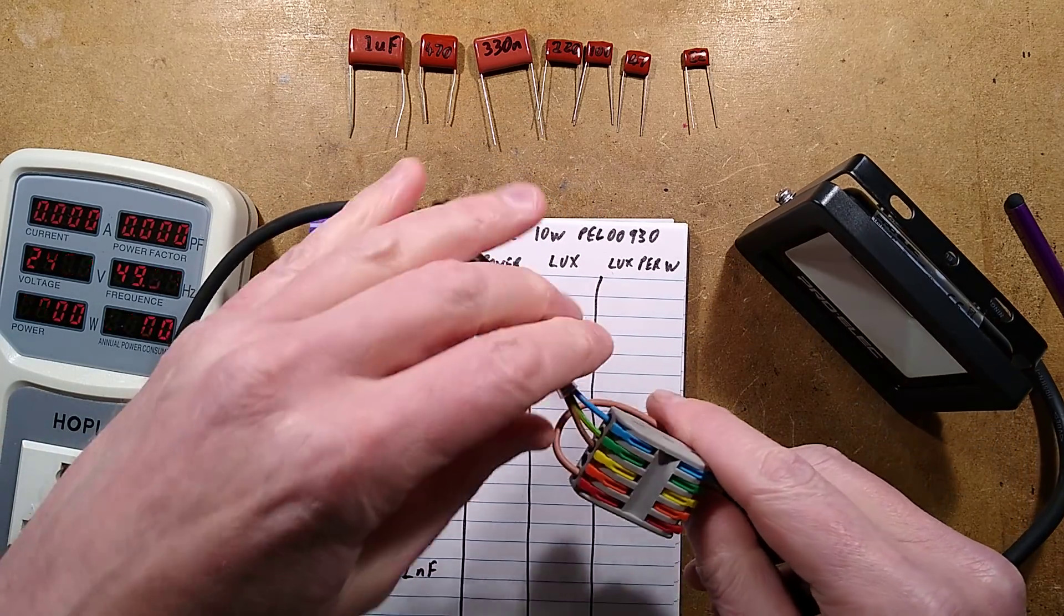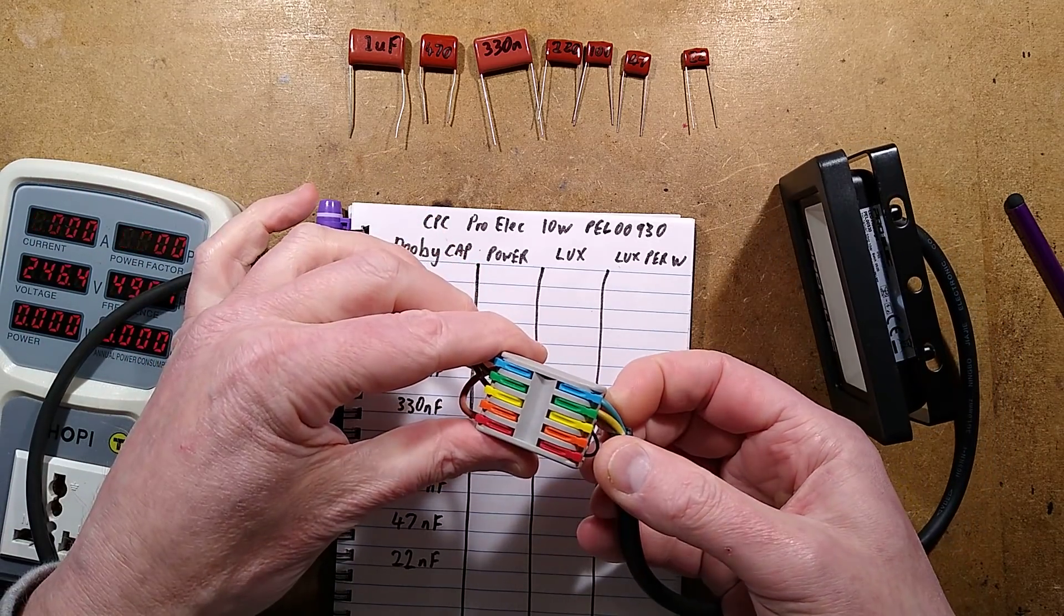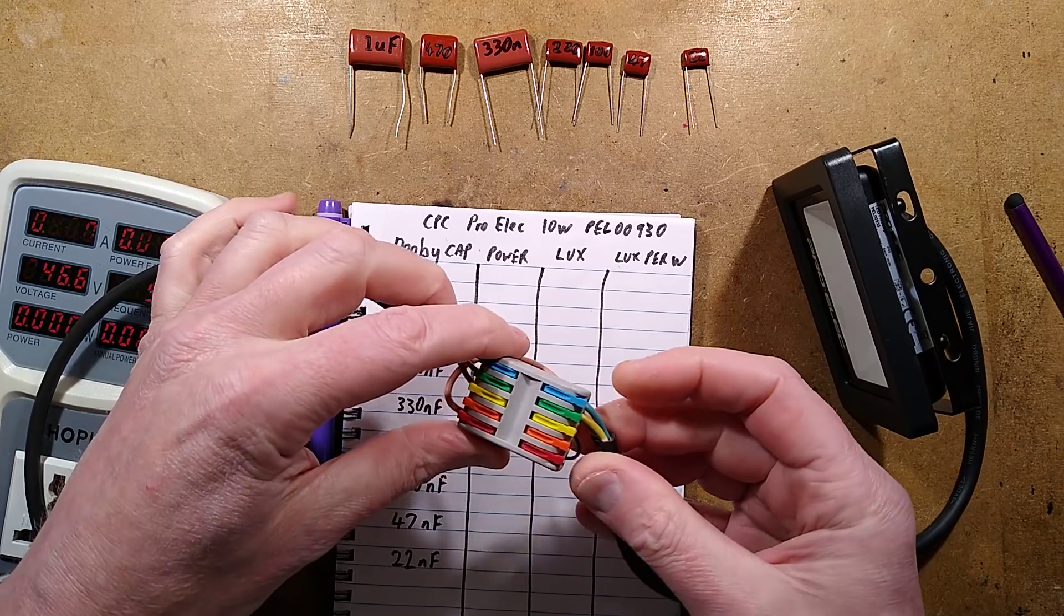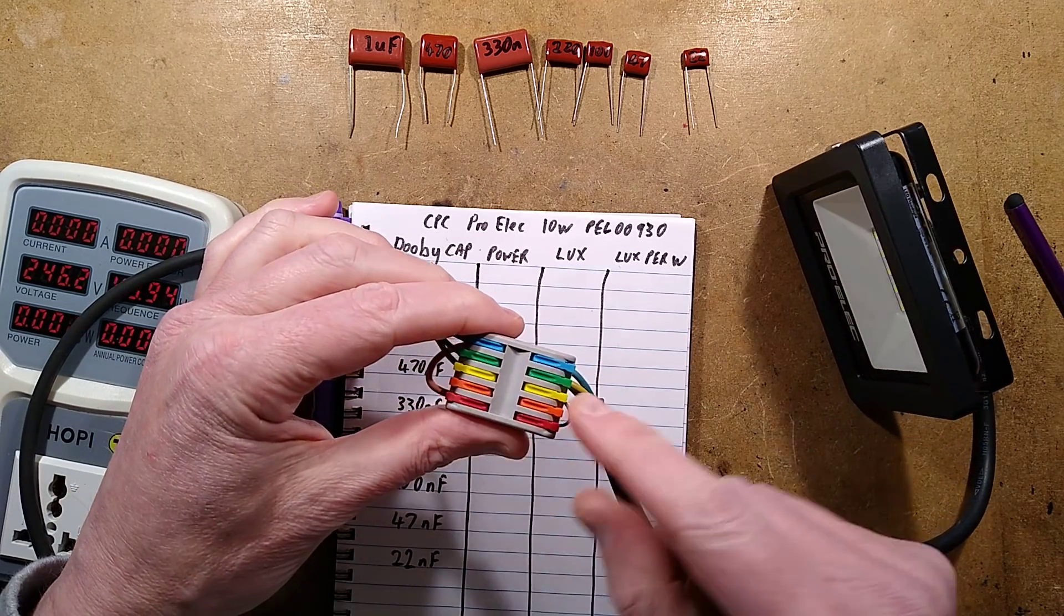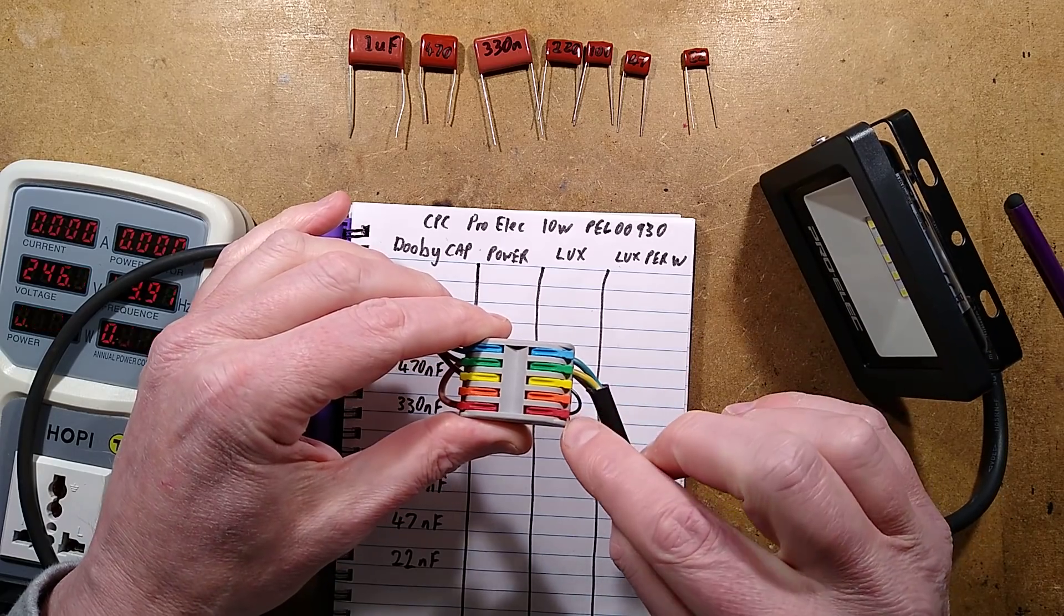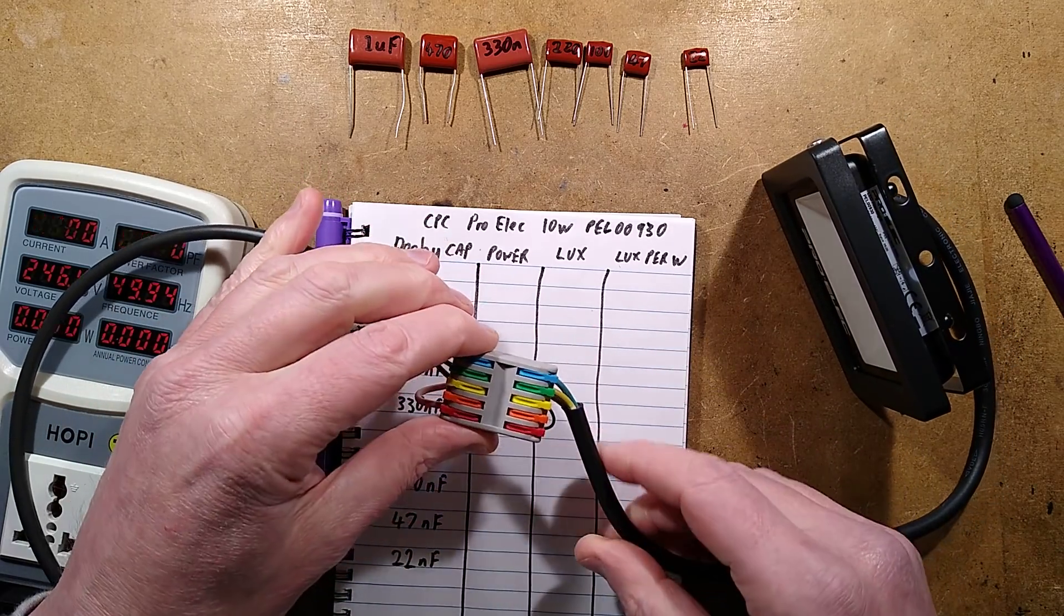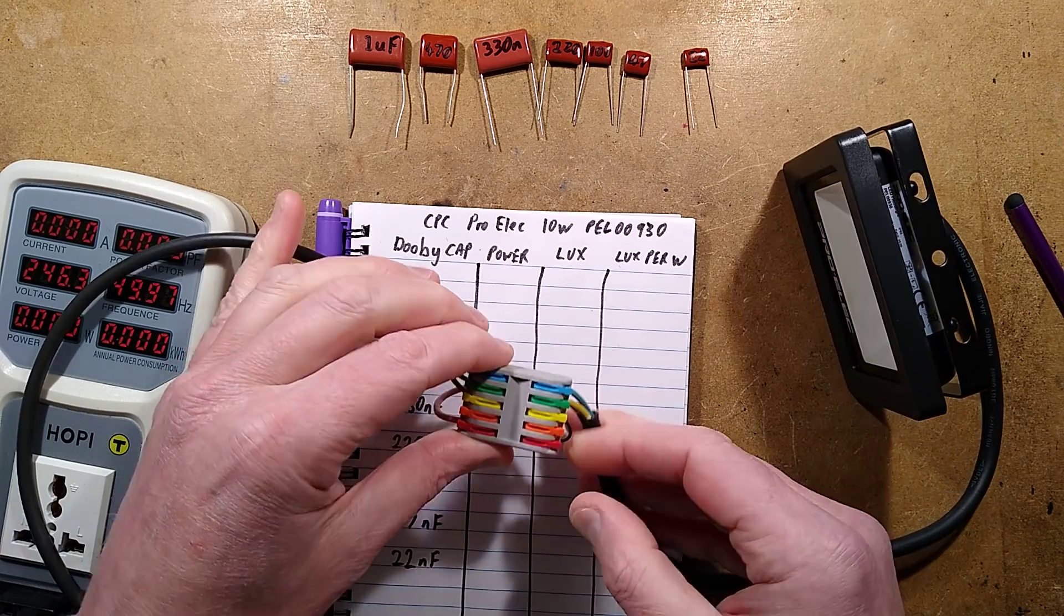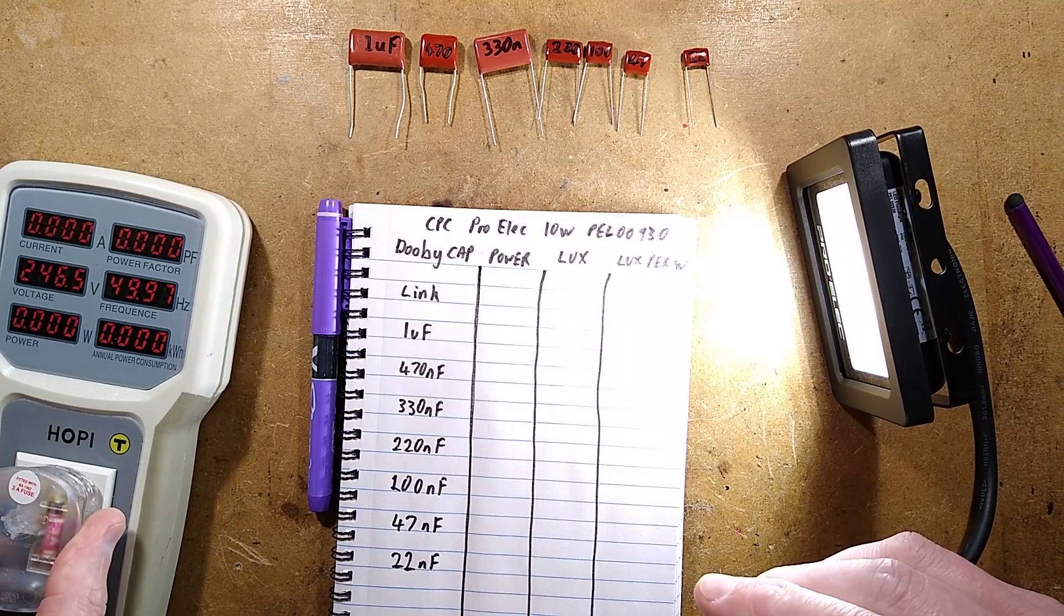The neutral came in is going through the blue directly to the light. The earth is going directly through the green to the light. And the brown live is going through the yellow, going via this link, which is going to replace the capacitor. And then it's going to the light via this wire. So at the moment, I've got this link in and I'm going to plug it in and it's rated 10 watts. Let's see what it actually shows.